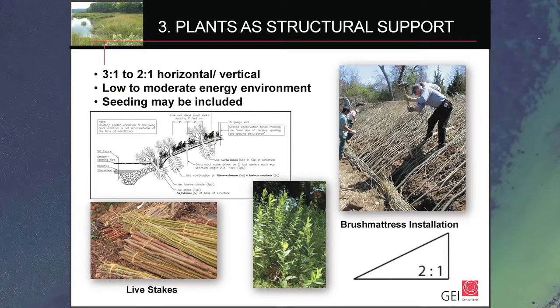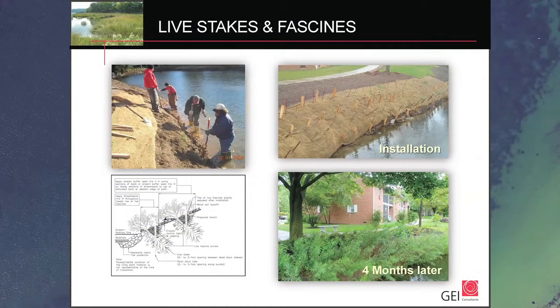When you get on steeper gradients — moving from three to one toward a two to one slope — you start to reach the limit of the angle of repose. In that situation you have to think about alternative means besides vegetation alone. This introduces bioengineering and the use of plant materials as structural support. The live stakes in the lower left are dormant cut shrub material, several years old, held dormant and installed before leaf breakout. When properly installed, it becomes structure on the slope before the plants emerge. The brush mattress on the right shows a fasheen bundle at the bottom protecting the toe, with live whips going up the slope.